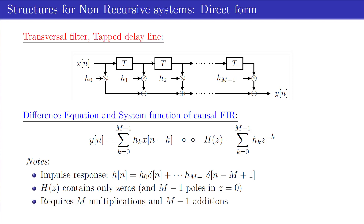For each new index n, evaluating the resulting sum requires m multiplications and m-1 additions. Finally, the structure is always stable.